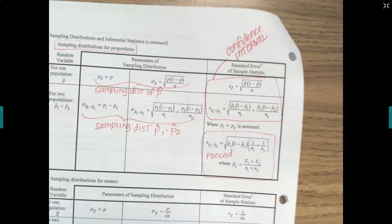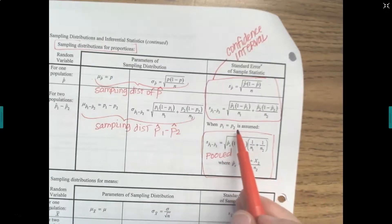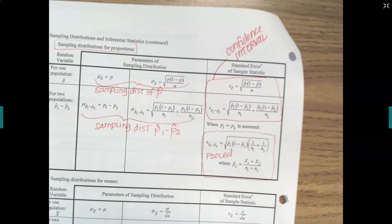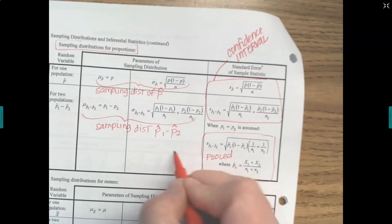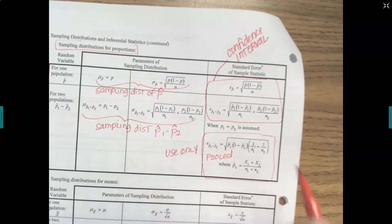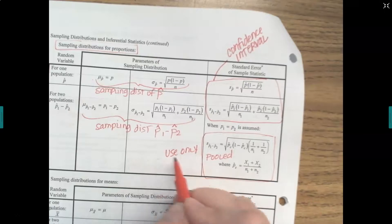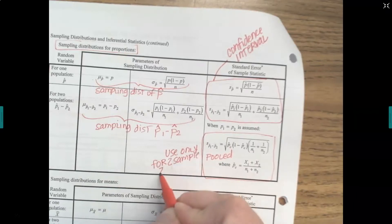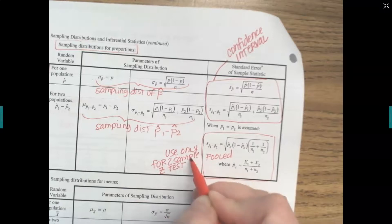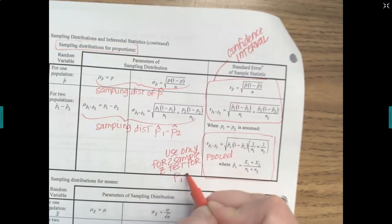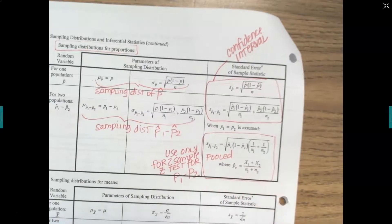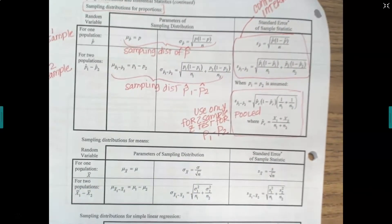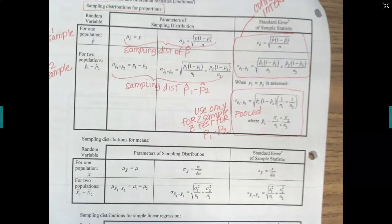Pooling is used only for the two-sample z-test for p1 minus p2. Every other time, use the formulas as written. That was a special situation. After proportions, we talked about means — again with one-sample and two-sample sampling distributions. For means, you assume the sampling distribution mean equals the population mean.